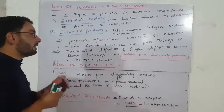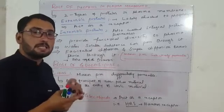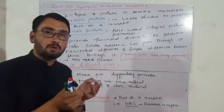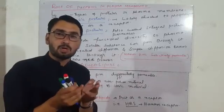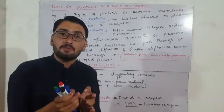Through intrinsic protein, certain substances are transported into the cell — through diffusion, through osmosis, or through facilitated diffusion.